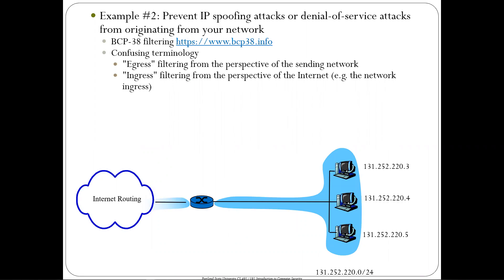Another really important use of egress filtering is to prevent IP spoofing attacks. Because we trust hosts to write their own source IP address in packets, you can pretend to be anybody. BCP 38, a best common practice set of ISP rules, specifies that you should not let outgoing packets from your network out if they don't have a source IP address that you own. Prevent spoofing by universally applying BCP 38 filters throughout the edge.